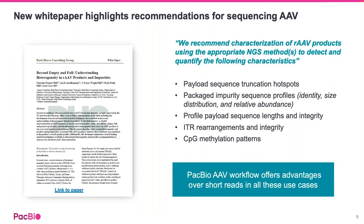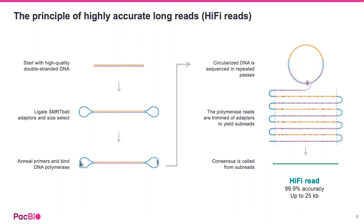A recent white paper by Dark Horse Consulting Group recommends the characterization of recombinant AAV products using sequencing methods. PacBio HiFi sequencing offers advantages over short-read sequencing for all the important characteristics to be measured. The principle of HiFi sequencing is the ligation of SMRTbell adapters to double-stranded DNA, followed by the sequencing of the circularized DNA template. The polymerase passes the sequence multiple times, and the consensus sequence from these subreads is called a HiFi read. HiFi reads have 99.9% accuracy — Q30 — and can be up to 25 kb long.